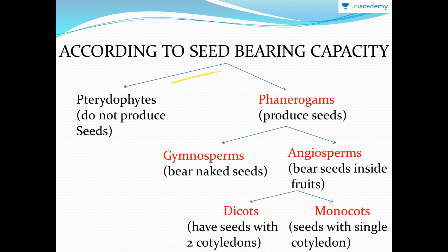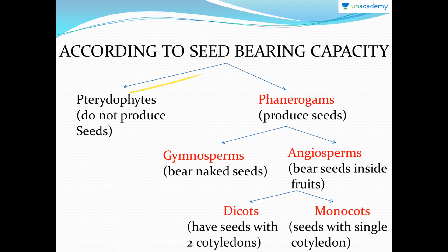The division is done between pteridophytes and phanerogams because these are the more modified plants. Well-differentiated plants with a vascular system are divided into two: pteridophytes, which do not produce seeds, and phanerogams, which produce seeds. The seed-producing phanerogams further divide into gymnosperms and angiosperms.